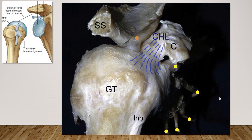The coracohumeral ligament originates from the coracoid process and extends over the rotator cuff interval, the cranial part of the subscapularis, and the caudal part of the supraspinatus. It inserts into the greater tubercle and lesser tubercle.